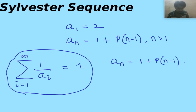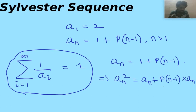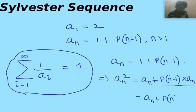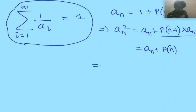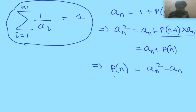Let us try to utilize that. Multiplying both sides by a_n, we get a_n squared equals a_n plus the product of the first n minus 1 elements times a_n. This is the product of the first n minus 1 elements and the nth element, so this is simply the product of the first n elements. This gives us: product of first n elements equals a_n squared minus a_n, simply by rearranging the equation.